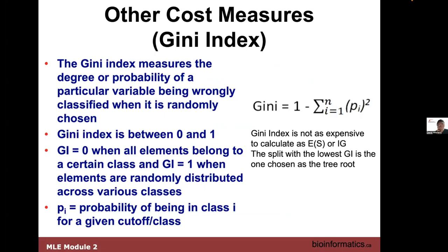Entropy is a great way of doing information gain calculation, but there's another way called the Gini index. What's nice about the Gini index is that because you're not doing logs — just squares — it's a faster calculation. The rating is opposite: a high information gain (IG) is good, whereas a low Gini index is good. Like entropy, the Gini index ranges between 0 and 1. There's a PI — probability of being in the class — and the formula is 1 minus the sum of P² across different classes. So this is an alternative to information gain: low GI is good, high IG is good.